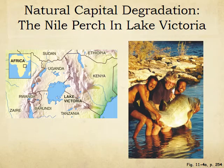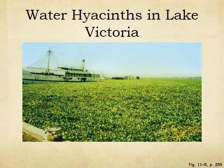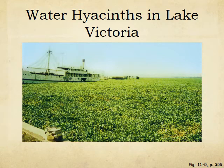This is the Nile perch. Lake Victoria is in the corner spot of Uganda, Kenya, and Tanzania. They were introduced so that people could fish them and have something to eat because they grow to huge sizes. These are actually water hyacinths that clog this waterway. When you have this massive mat of plants on top, the oxygen exchange is very low and it also blocks the sunlight, causing a lot of eutrophication and low oxygen in the water.